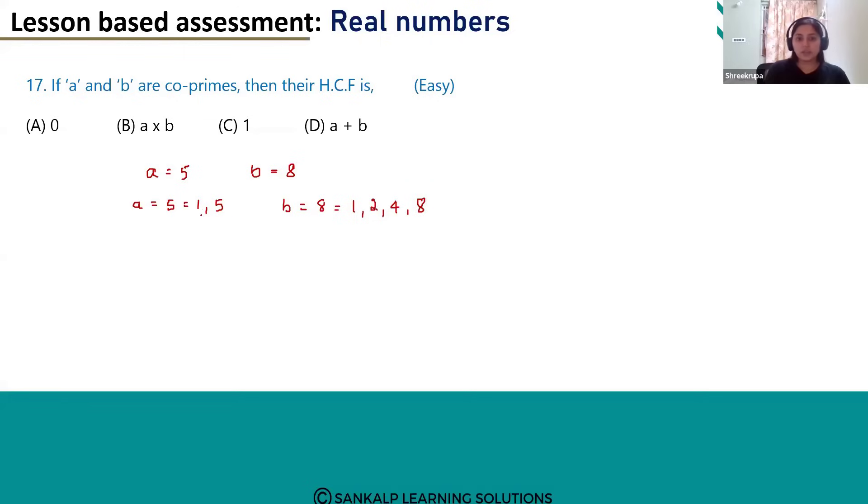But if you see the numbers only 1 is common in these two numbers, right? So HCF of 5 and 8 will be 1. I mean when we take any two coprime numbers we will get the HCF as 1. So the answer for this question is option C.